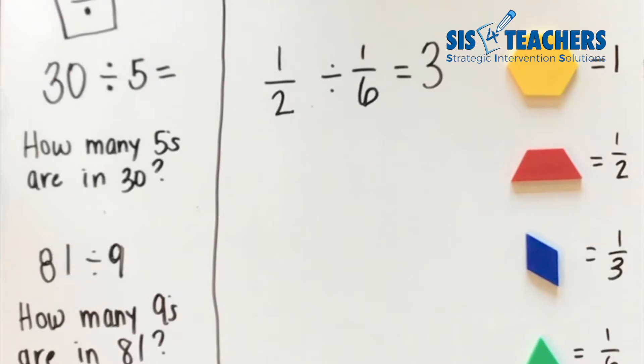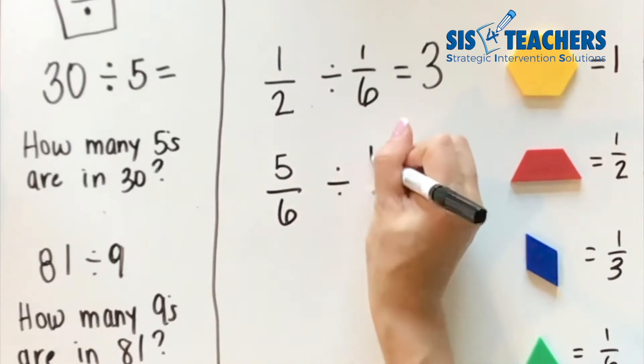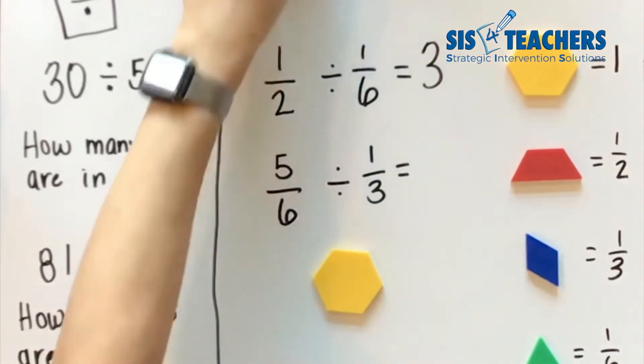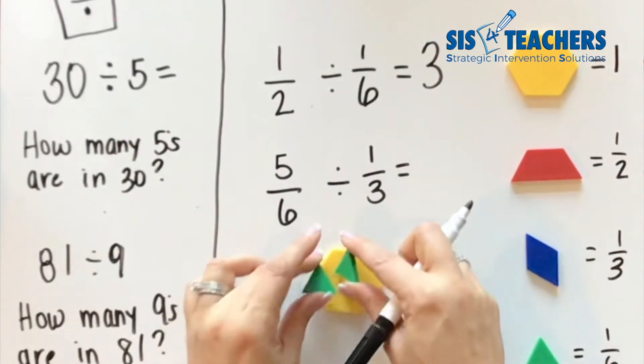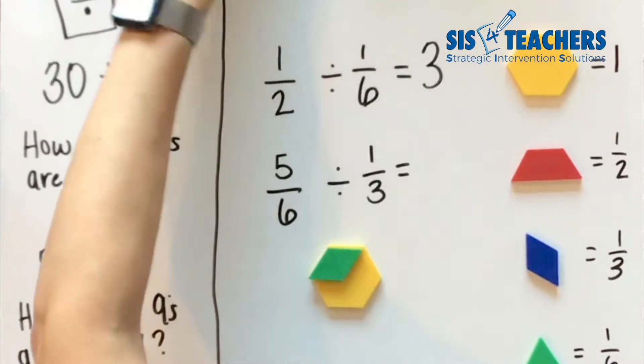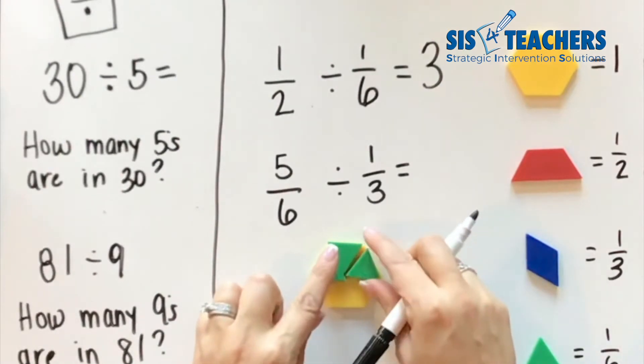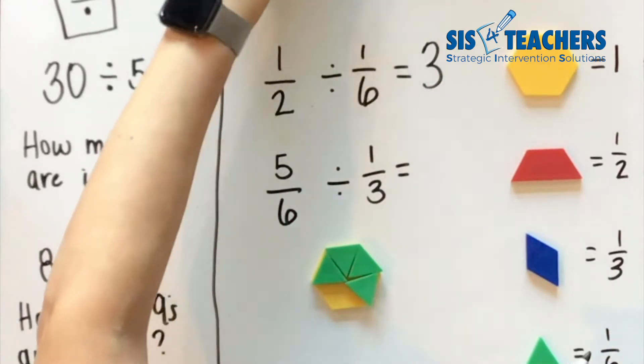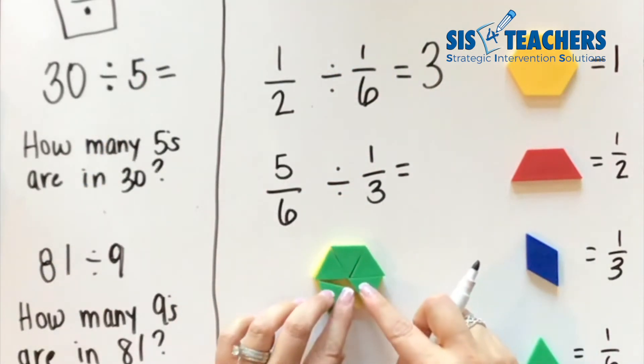Okay, let's try another problem. Let's try 5/6 divided by 1/3. Again, what is this asking? It's asking how many thirds are there in 5/6. If you need to, you can always put the one whole on there and build it on top to see. So I'm first going to build my 5/6 in relationship to the whole. Here I have an example of 5/6.